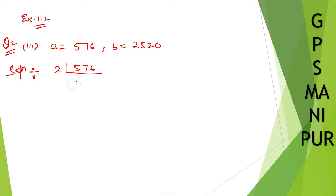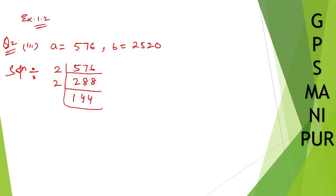2 into 4 is 8, 2 into 8 is 16, again we can divide by 2, that gives 2 into 2 is 4, 2 into 8 is 16. 144 divided by 2 again gives 72, divided by 2 again.